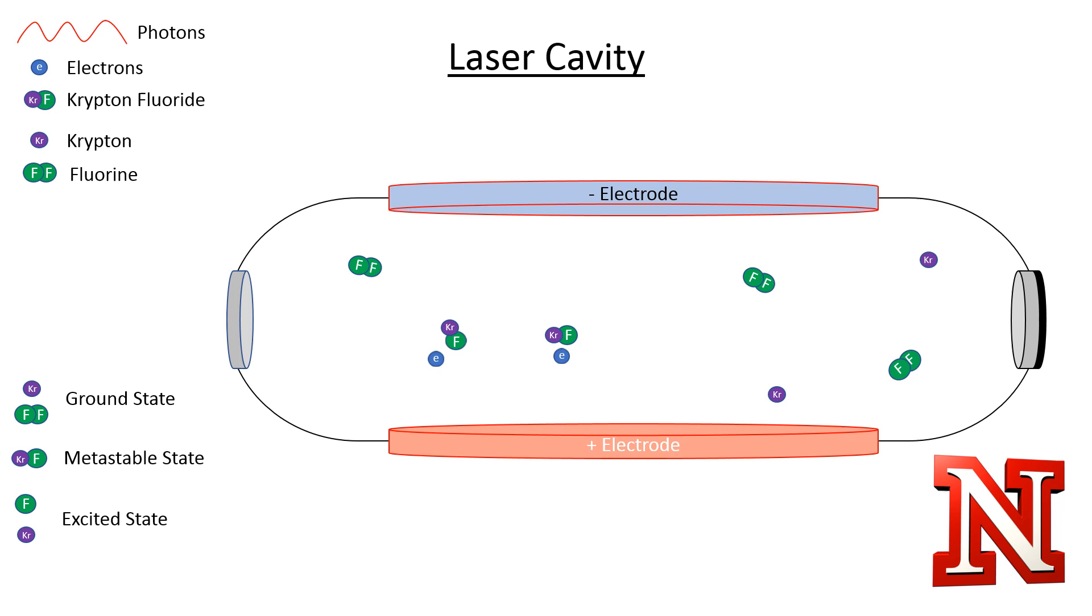The krypton fluoride molecule is unstable and can randomly produce a photon. When this photon contacts another krypton fluoride molecule, it de-excites the molecule and produces a photon. Since the molecule de-excitation was initiated by a photon, the photon produced travels in the same direction as the initiating photon.